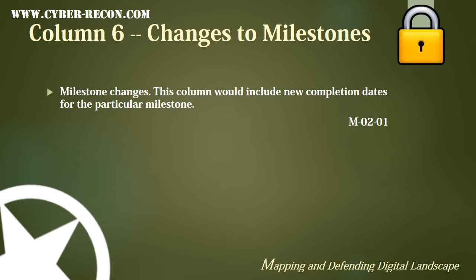Column 6 indicates changes to milestones. This column would indicate new completion dates for a particular milestone. As these changes occur throughout the system's life cycle, one could assume that this column should be changed.